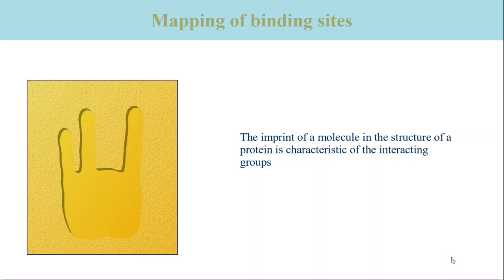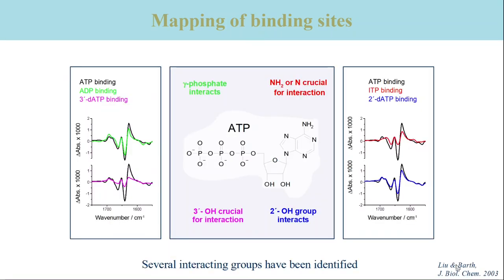We can do that with infrared spectroscopy, again using the amide-1 region, which monitors conformational changes of the backbone. We have mapped the ATP binding site using derivatives that were modified at the terminal phosphate group, at the amino function of adenine, and at the 2-prime and 3-prime hydroxyl groups of the ribose.